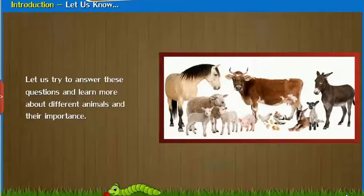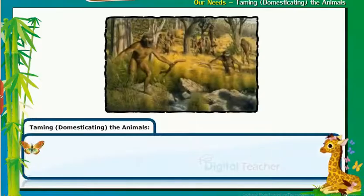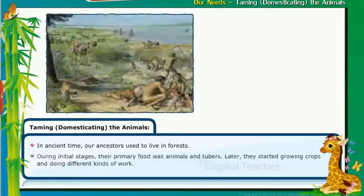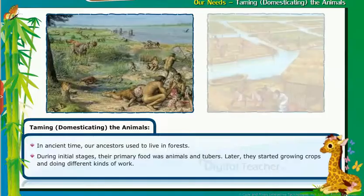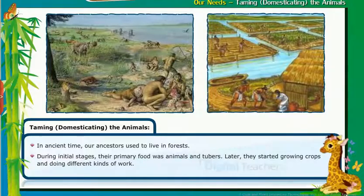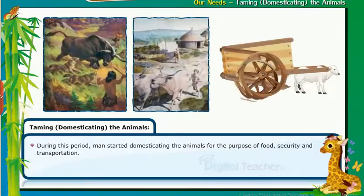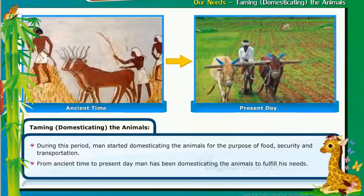Let us study about the importance of animals from our ancestors' time. In ancient times, our ancestors used to live in forests. During the initial stages, their primary food was animals and tubers. Later, they started growing crops and doing different kinds of work. During this period, man started domesticating animals for the purpose of food security and transportation.